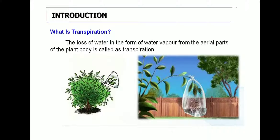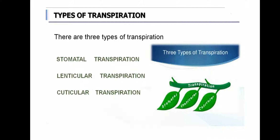The loss of water in the form of water vapor is very important. Water is lost from the plant — that is, excess water is lost from the plant in the form of water vapor. This is called transpiration.